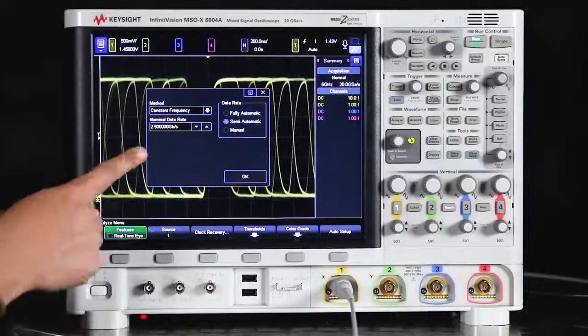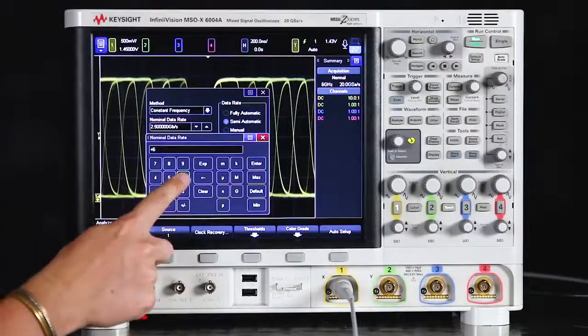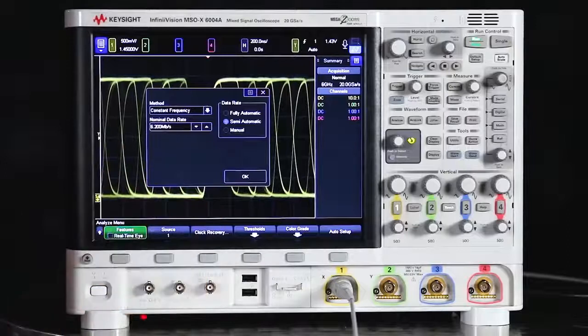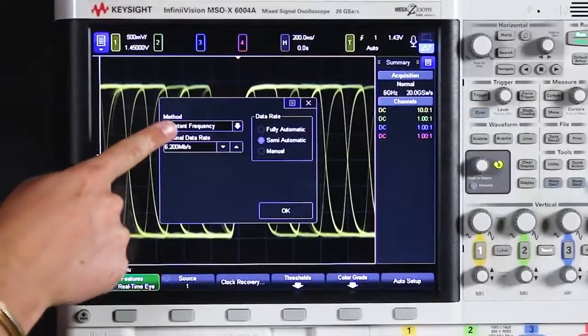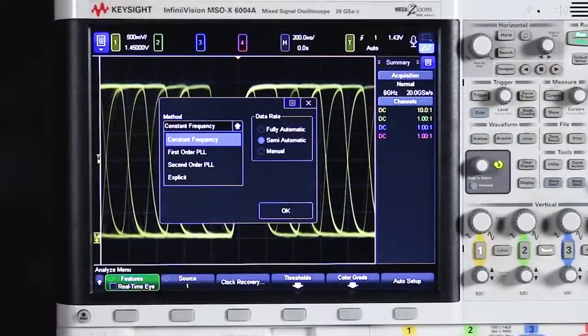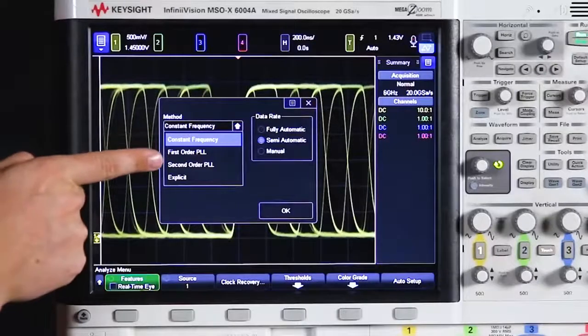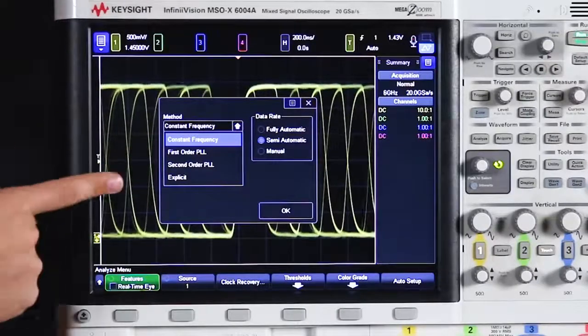So in the nominal data rate box, we want to plug in that 6.2 megabit bitrate that we just measured. And we can also see there are a few different methods of clock recovery as well. So there's constant frequency, first order and second order PLL, and explicit.